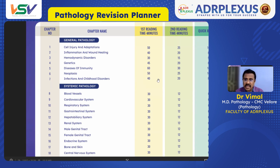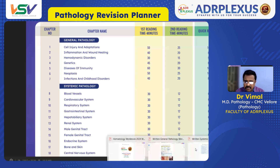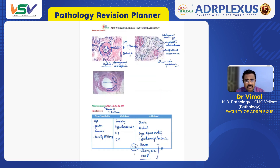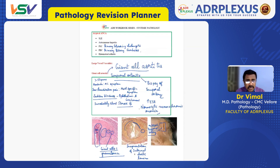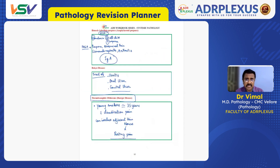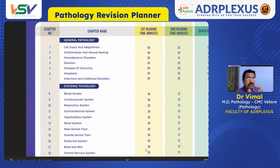Infections and childhood disorders — go through at a faster rate. For systemic pathology, approximately 30 minutes for first reading, 12 minutes for second reading, and 6 minutes for the quick third revision for each system. In blood vessels, vasculitis is a very high-yield topic — questions are asked on it very frequently. In the third revision, you must go through vasculitis keywords every time. For all subjects, high-yield points must be revised even in the third revision.